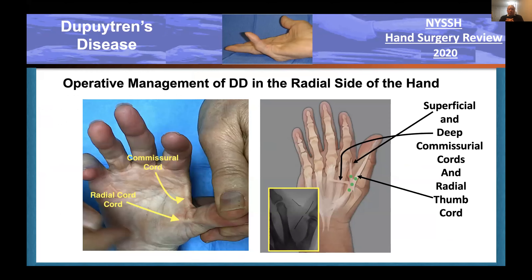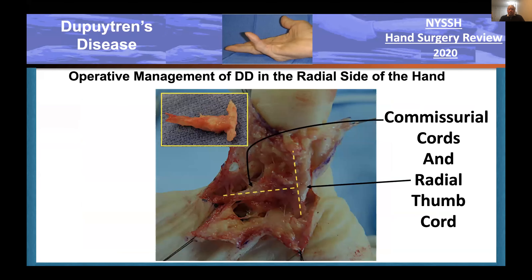The thumb is involved in two areas: the commissural cord seen on the left, and the radial cord going up the thumb longitudinally radial to the flexor tendon. An X-ray shows a wire placed on the cord to show the relationship of the cords to the skeleton. The drawing shows targets for collagenase injection when dealing with this particular cord in the thumb. Here's a surgical image showing the radial cord, the path of the commissural cord, and the excised specimen.